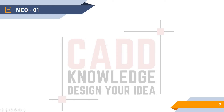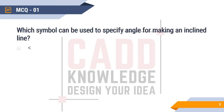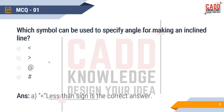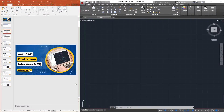MCQ1: Which symbol can be used to specify the angle for making an inclined line? The correct answer is the less-than sign (<).